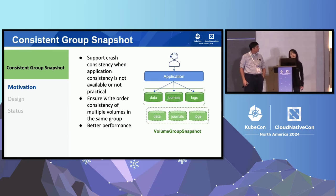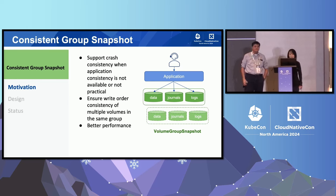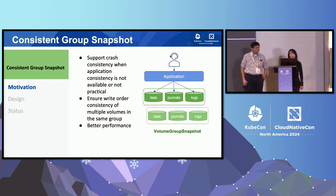To ensure application consistency, we need to quiesce the application before taking a snapshot. But what if it's not possible to quiesce the application, or if it's too expensive to do so? You want to do it less frequently, but still be able to do a crash consistent snapshot more frequently. An application may contain multiple volumes, and that requires a snapshot to be taken at the same point in time across all volumes. It will be much more efficient to take a snapshot as one step across all volumes compared to taking one at a time. That's how consistent group snapshot comes into the picture.